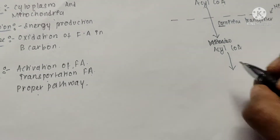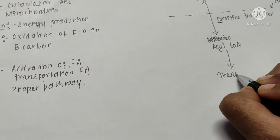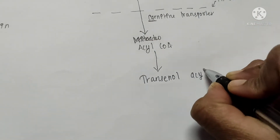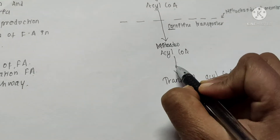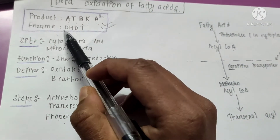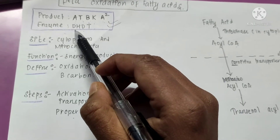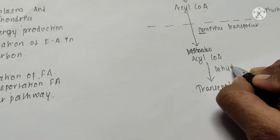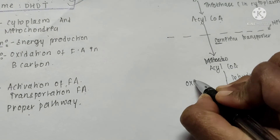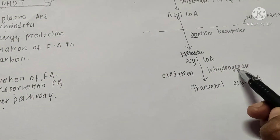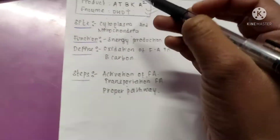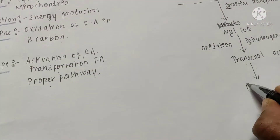The next product is T — trans-enoyl acyl CoA. The enzyme involved comes from D in our mnemonic, which is dehydrogenase. This is an oxidation reaction; dehydrogenase acts on acyl CoA to form trans-enoyl acyl CoA.